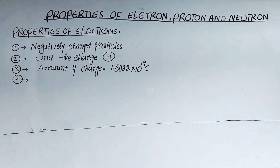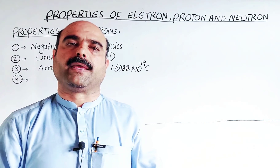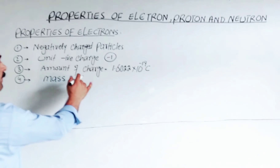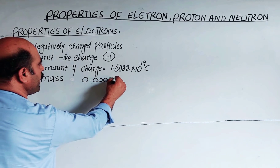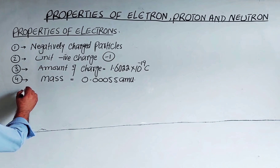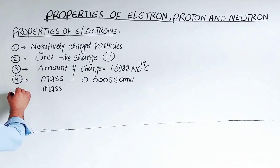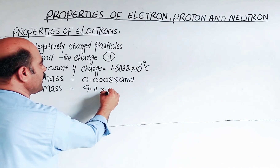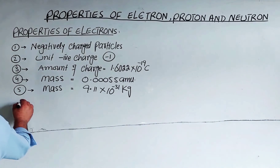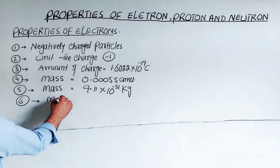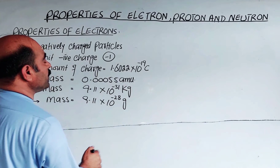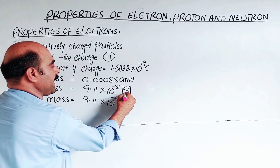The electron is a light particle. Its mass in atomic mass unit (AMU) is 0.000549 AMU. The mass of the electron in kilograms is 9.11 × 10⁻³¹ kg. In grams, the mass is 9.11 × 10⁻²⁸ grams.